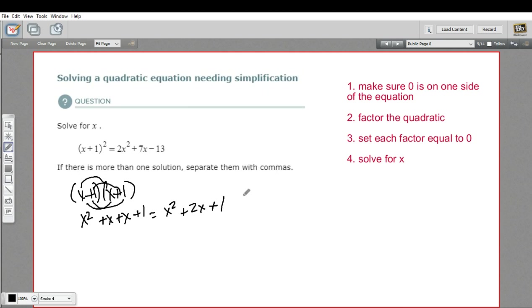And that equals 2x squared plus 7x minus 13. Now, I'm going to take that out of our consideration for right now. Let's go ahead and set this side equal to 0.